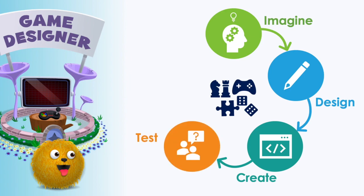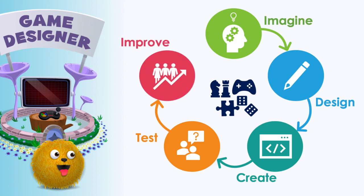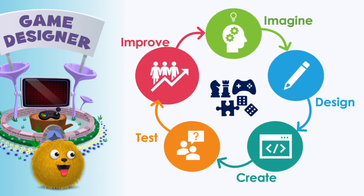Step four: test. Have people try it out and give feedback. Step five: improve. What is working? What could be better? Repeat this process to continue to improve your game over time.